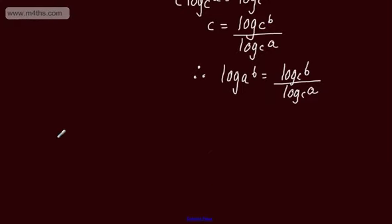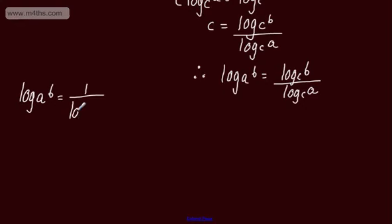There is a special case of the change of base formula. Log to the base A of B is equal to 1 over log to the base B of A. So all we have here is log to the base A of B is equal to 1 over log to the base B of A.